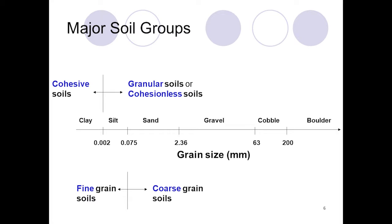Grain sizes: 0.002 mm or less are called clays, above that are silts at 0.075 mm, and above that are sands at 2.36 mm. Above that are gravels, and 200 mm are boulders. 0.075 micron or less are called fine-grained soils, and above are coarse-grained soils.